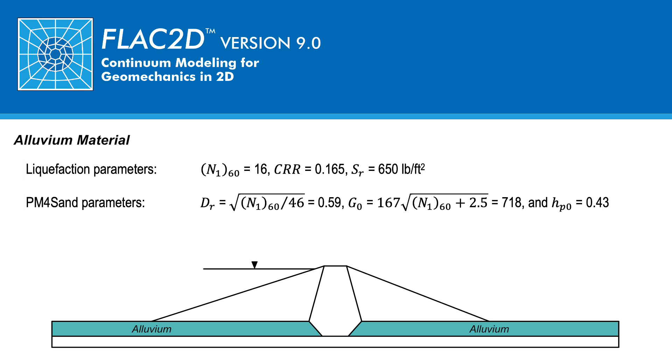At this N160, the associated target normalized cyclic shear strength will be 0.165 and the residual shear strength equal to 650 pounds per feet squared. The PM4 sand model will be used to model the cyclic mobility liquefaction response during shaking.